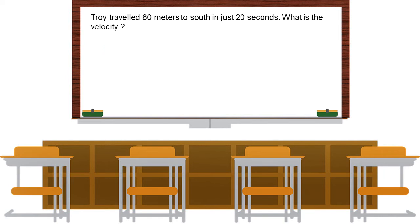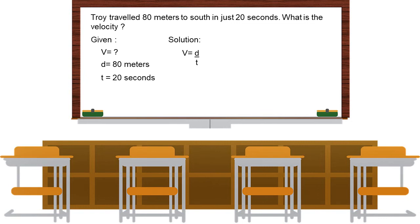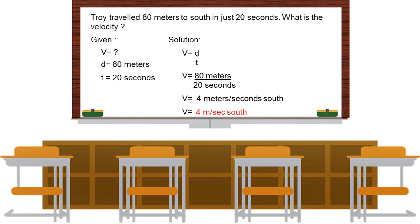Problem 2: Troy traveled 80 meters to the south in just 20 seconds. What is the velocity? Given: v is unknown, d equals 80 meters, t equals 20 seconds. V equals 80 meters over 20 seconds, which equals 4 meters per second to the south. So the velocity is 4 m/s south.